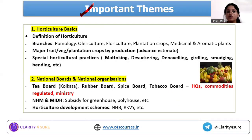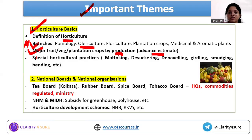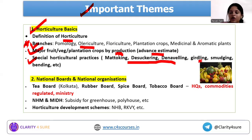For horticulture basics, cover definitions and different branches — branches are a really important part. Also cover major fruit, vegetable, and plantation crop production from advance estimates. Additionally, there are special horticulture practices to cover, such as mulching, desuckering, denaveiling in banana, girdling in grapes, smudging, and bedding. These special horticulture practices are an important part.